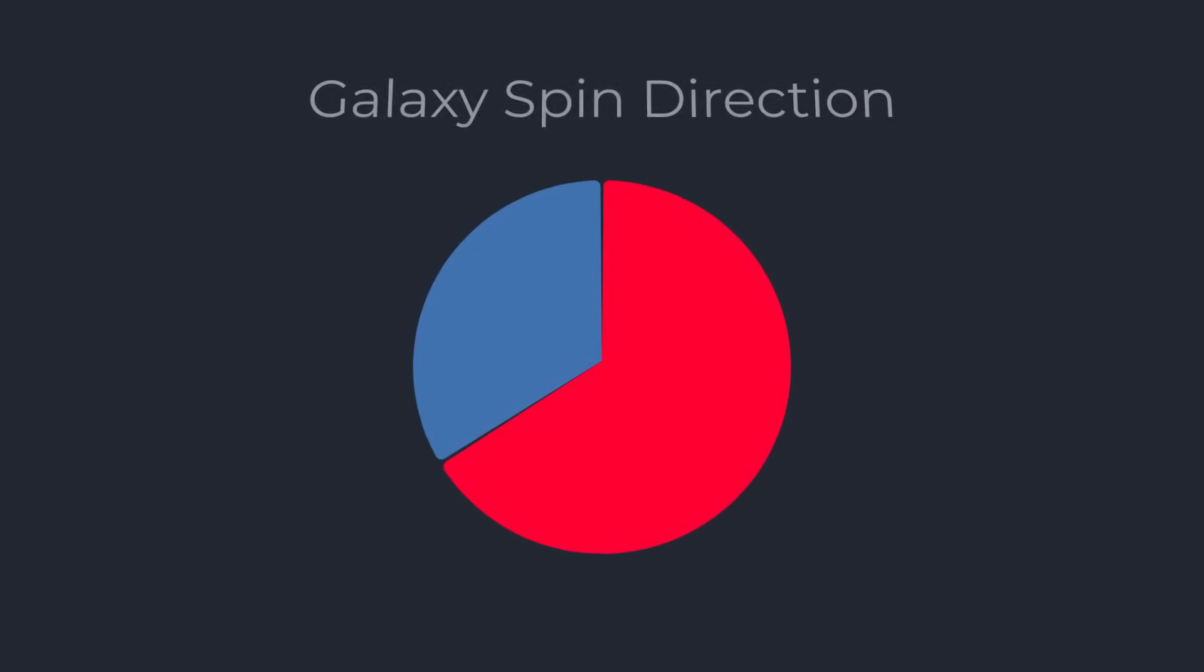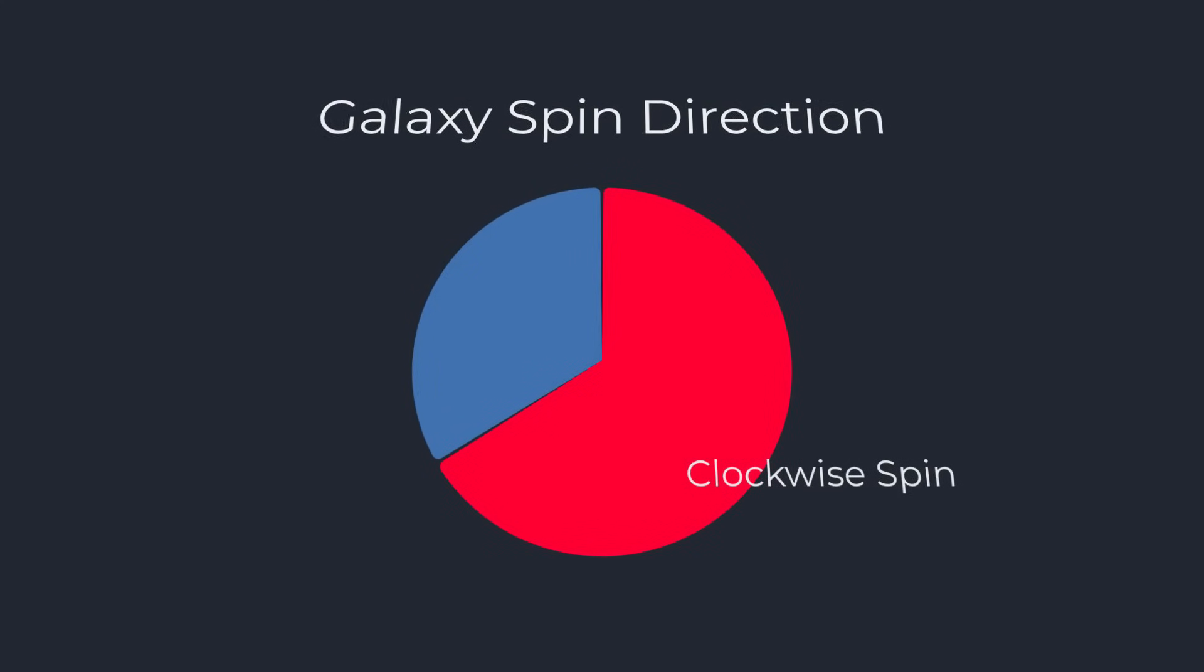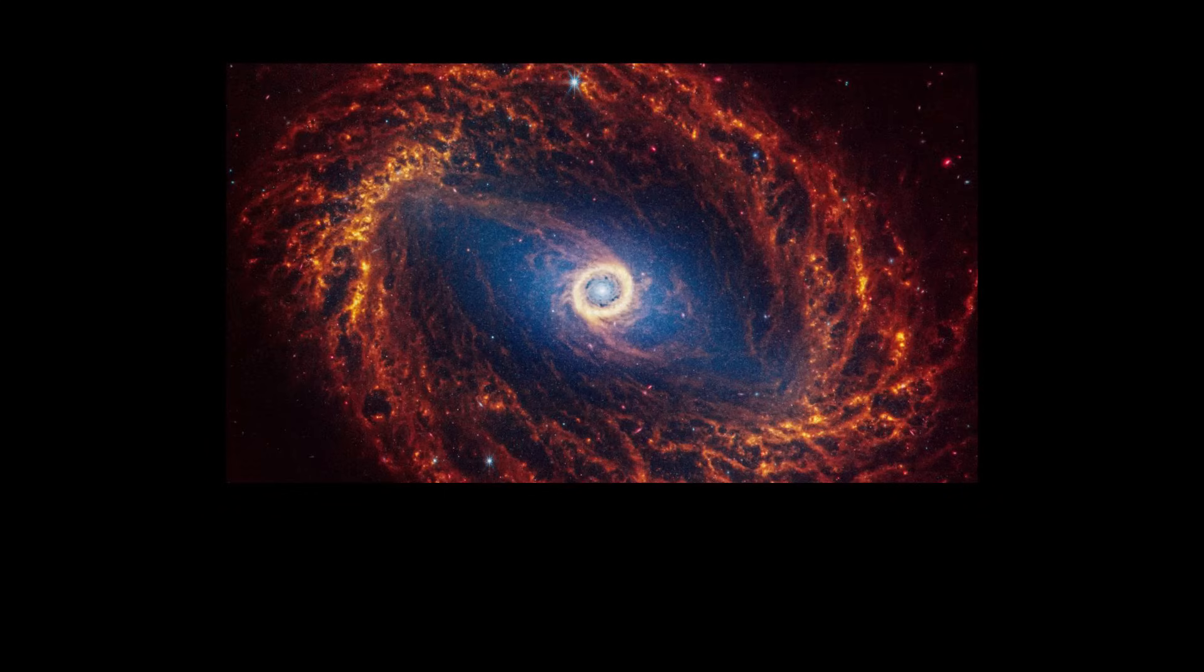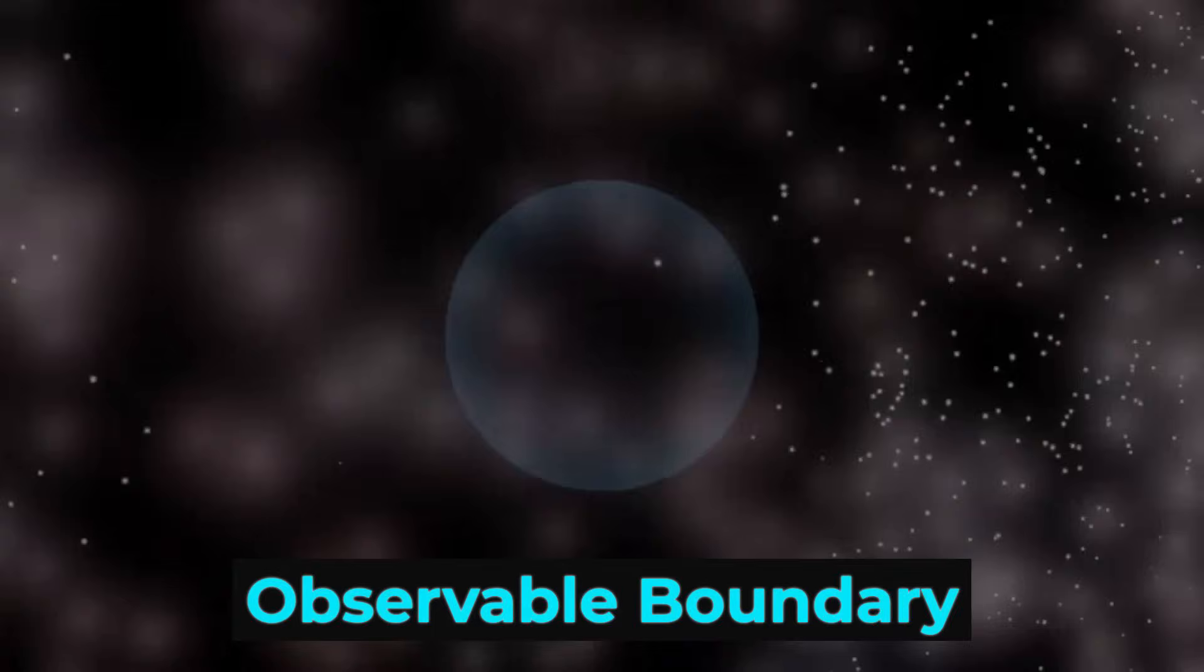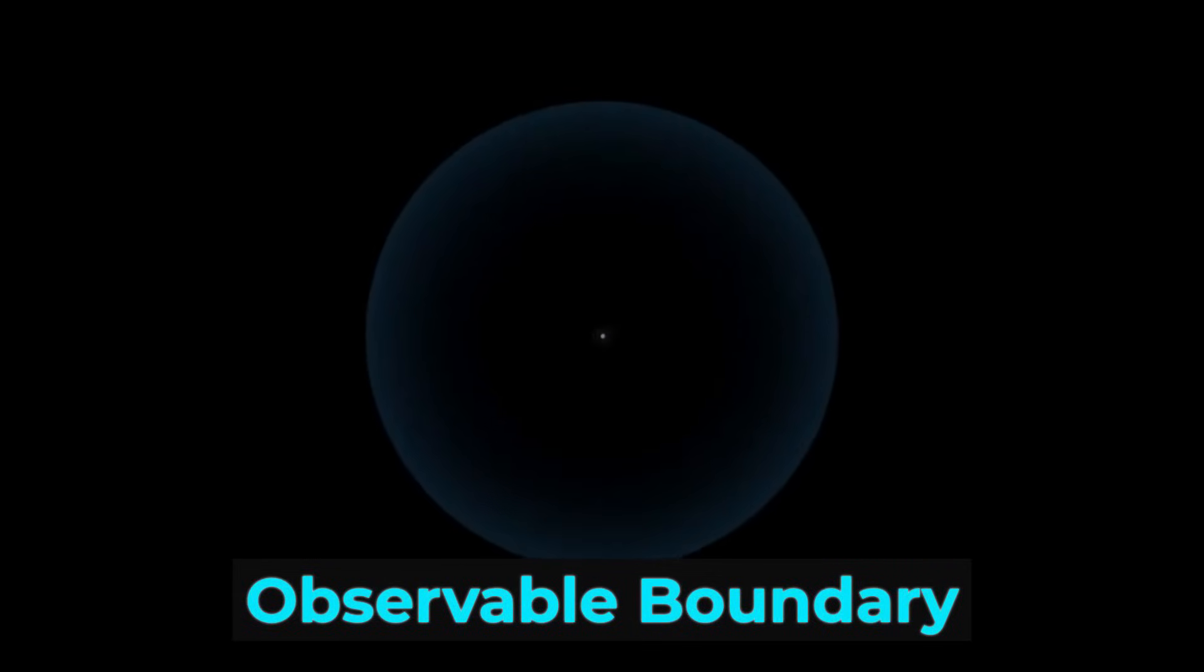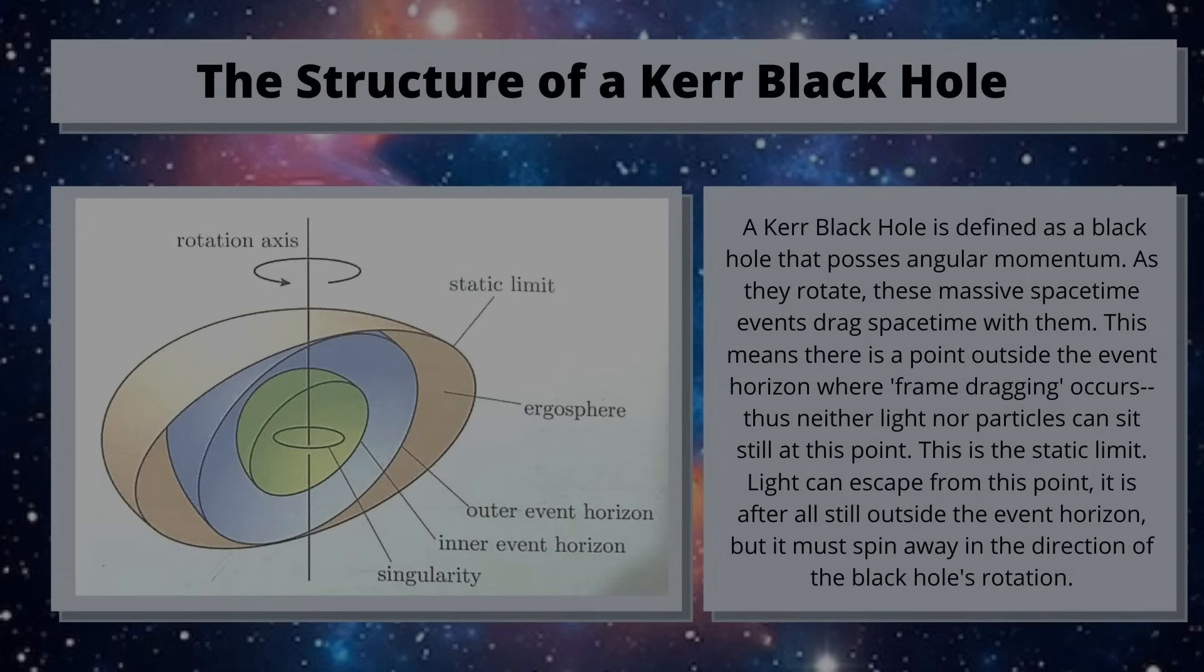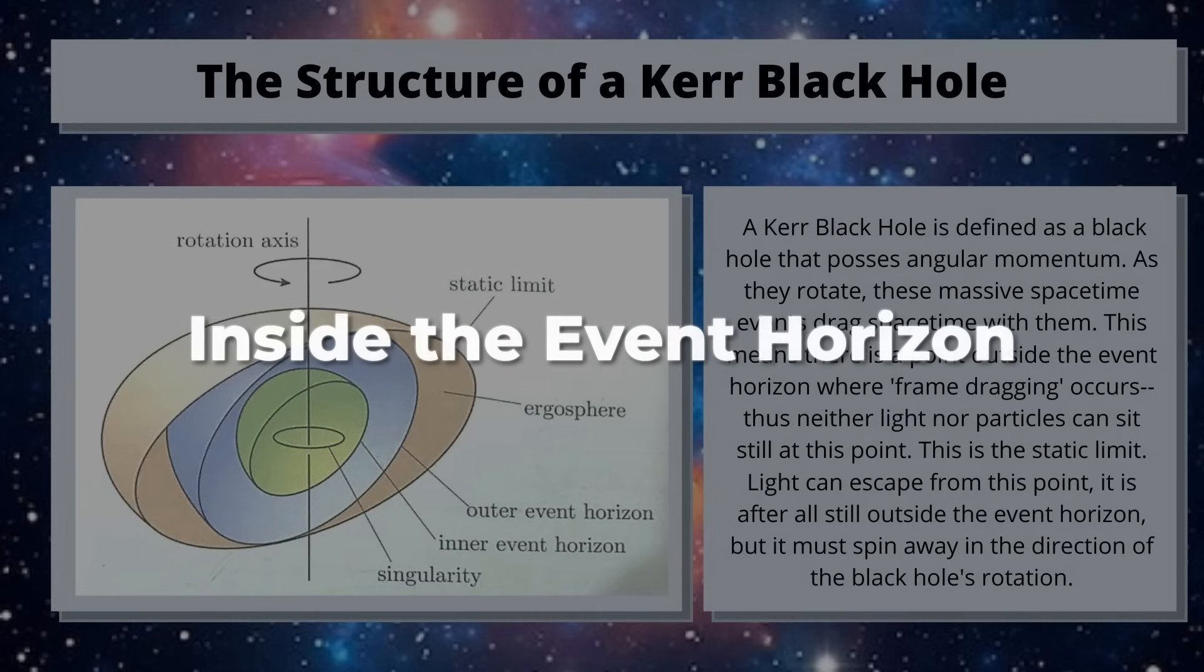The latest James Webb Space Telescope data shows 66% of distant spiral galaxies spinning clockwise, a pattern some theorists argue could only arise if our universe inherited its spin from a parent black hole. The geometry matches too. The boundary of our observable universe is the precise size predicted for an event horizon, given our universe's mass.